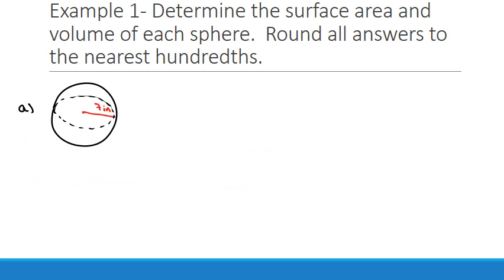Let's look at our first example. Determine the surface area and volume of each sphere. Round all answers to the nearest hundredths. Okay, so last video we didn't really talk about rounding. I made sure in this video we talked about rounding. So let's look at our surface area first. The surface area for a sphere is 4πr². We know all those measurements, right? Four times 3.14. By all means, use the button on your calculator. You don't have to use 3.14. The radius is seven squared.